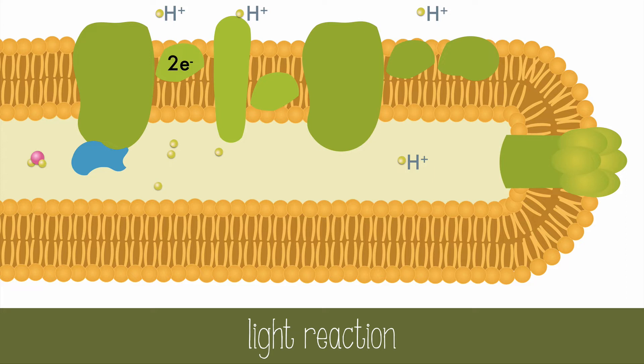Let's go back to our electrons in plastoquinone. Plastoquinone carries electrons from PS2 to the electron transport chain located in the thylakoid membrane. As electrons are transferred in the electron transport chain, energy is released and hydrogen ions are pumped across the thylakoid membrane into the thylakoid space. The concentration of protons in the thylakoid space is therefore increased by photolysis and the electron transport chain.